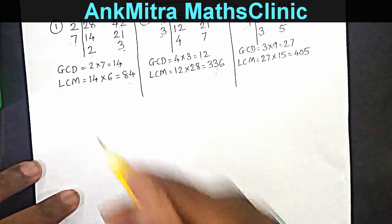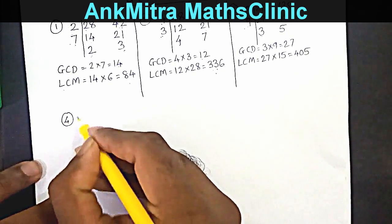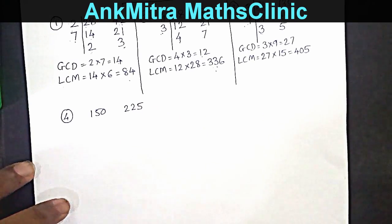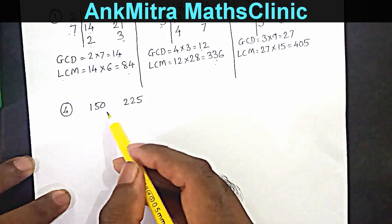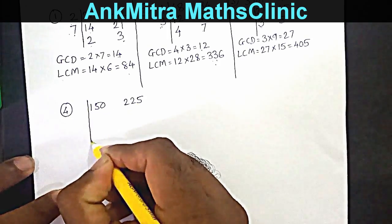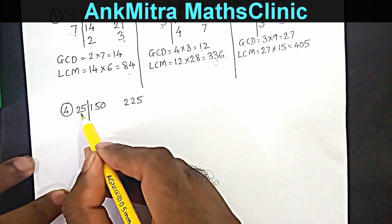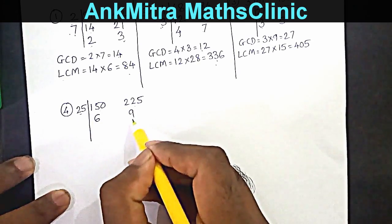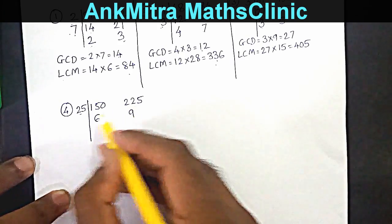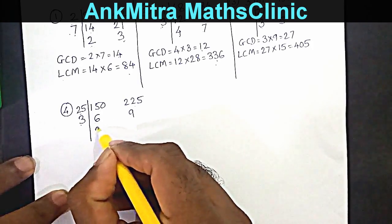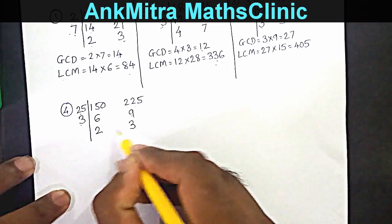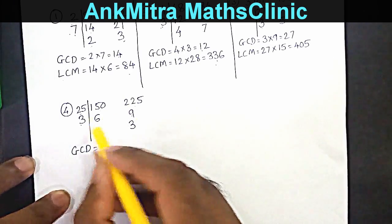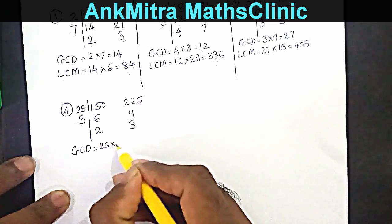For a slightly larger example, let's find GCD and LCM of 150 and 225. Both numbers are obviously multiples of 25, so we can start directly with 25 as a common factor. Dividing 150 by 25 gives 6, and dividing 225 by 25 gives 9. Now 6 and 9 have a common factor of 3. So 6 divided by 3 gives 2, and 9 divided by 3 gives 3. The uncommon factors are 2 and 3, and GCD is 25 multiplied by 3, which is 75.